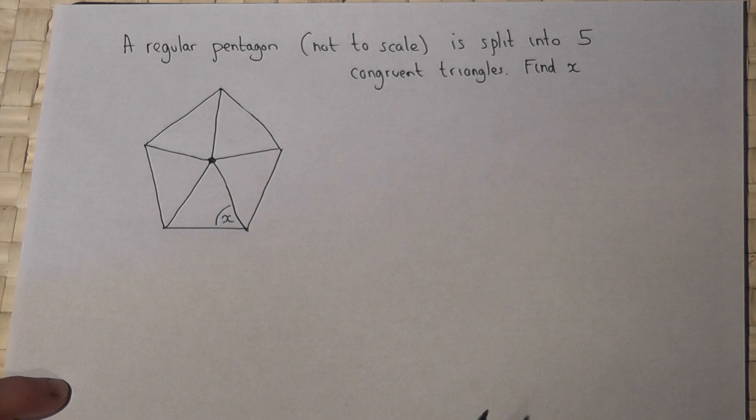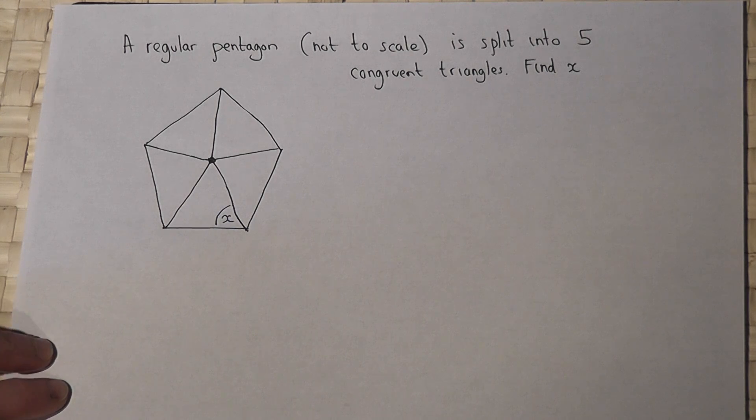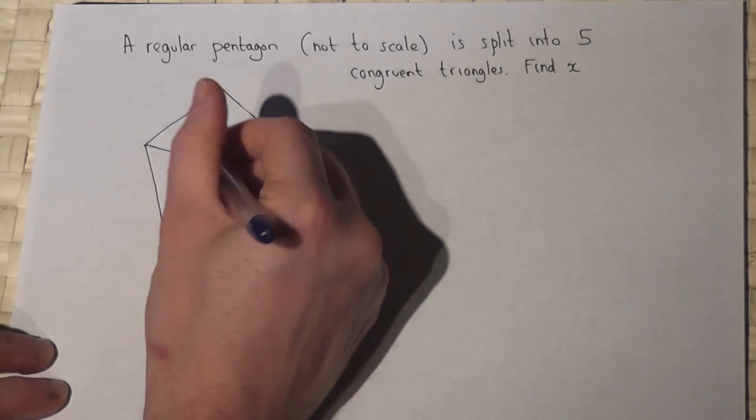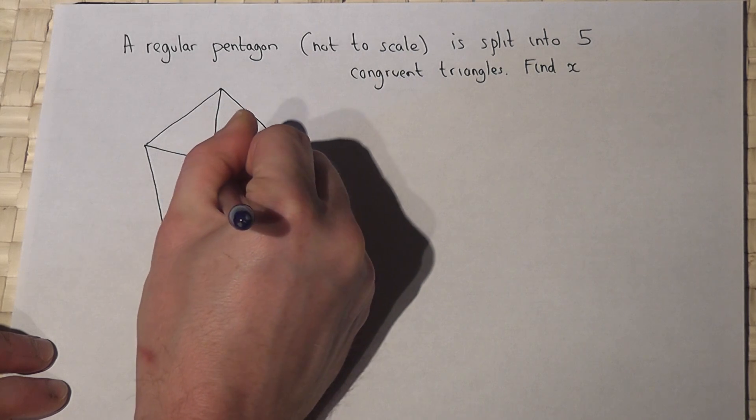Now there's two methods we can use to find X which are fairly standard approaches. Method one is to find out angle Y to begin with.